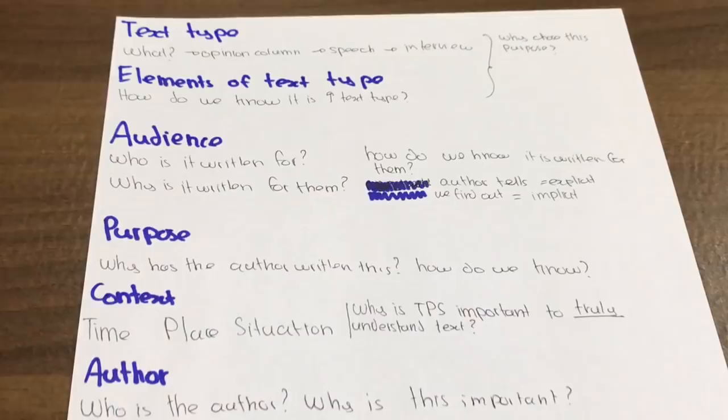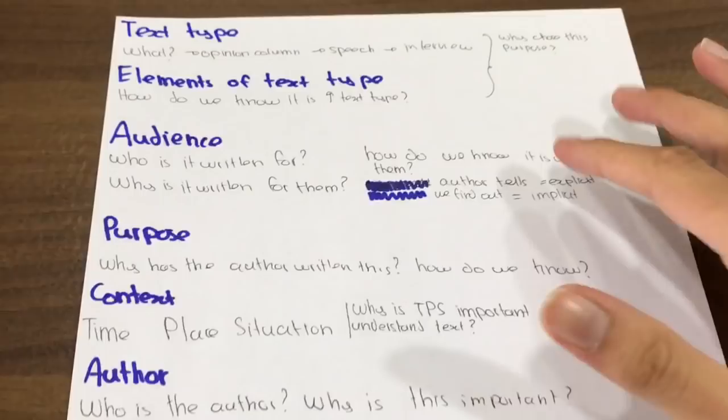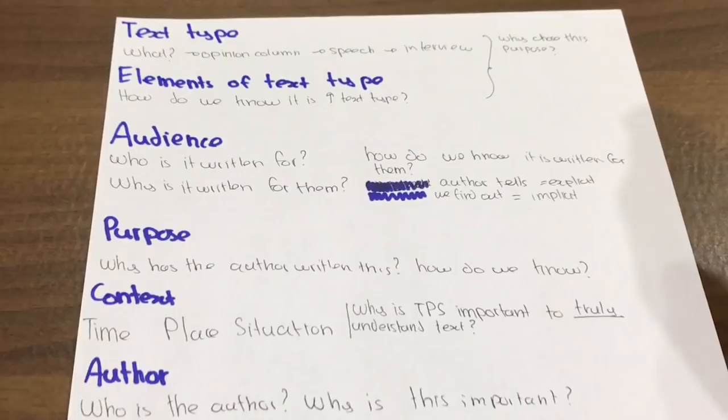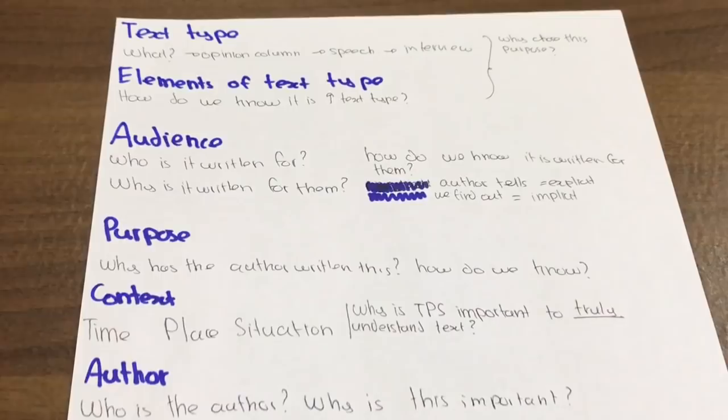So you need to identify which one of those is your text. Anyway, what are the elements of that text type? How do we know that it is the text type that you identified? And more importantly, why do these two things relate? Why did the author choose this specific text type? And why is that essential for the author's purpose? For example, if the author wrote an opinion column, maybe it's because he wanted to have an outlet to voice his anger on a particular controversial topic. So he would need to write an opinion column for that. So you have to identify how these two things relate to the author's purpose.